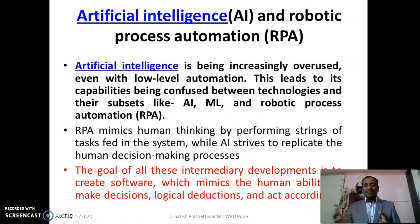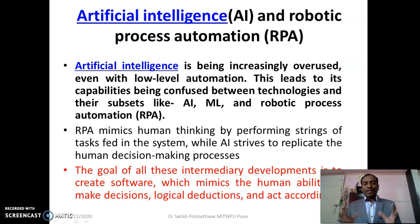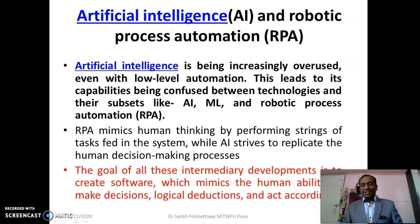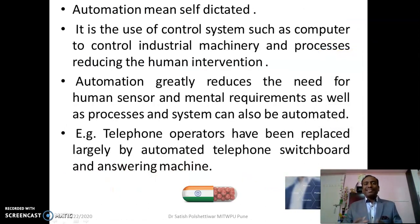Artificial intelligence is a major buzzword today. It encompasses machine learning, algorithms, and Robotic Process Automation (RPA). AI is increasingly overused even with low-level automation, leading to confusion between subsets like AI, ML, and RPA. RPA mimics human thinking by performing a string of tasks fed into the system. AI provides input to robotic systems, which then act on that input — this is the integration of AI and robots to get work done quickly and with quality. The goal is to create software that mimics human ability to make decisions through logic and deduction.